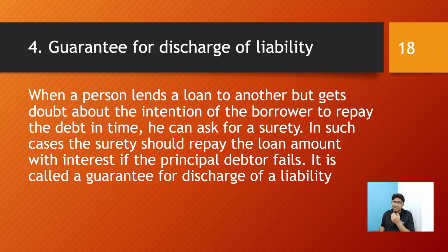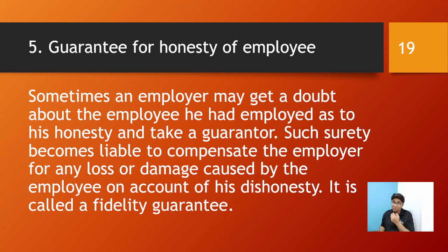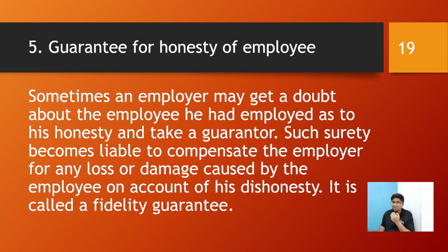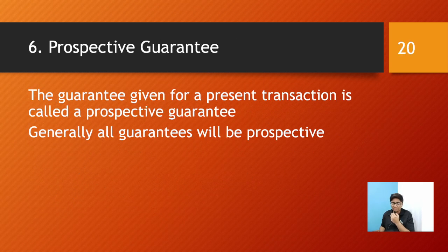The fifth kind is guarantee for honesty of an employee, also called fidelity guarantee. Sometimes an employer may have doubts about an employee's honesty and take a guarantor. The surety becomes liable to compensate the employer for any loss or damage caused by the employee on account of dishonesty. For example, if an HR department doubts the authenticity of an employee's documents, they can ask for a guarantor. If documents later prove to be forged, the resulting company loss can be claimed from the surety.